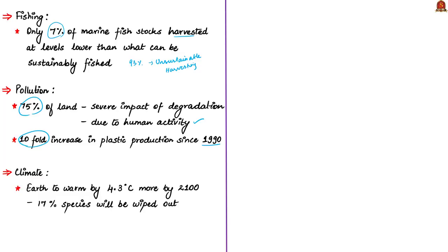With respect to climate, with the present trend, Earth is to warm by 4.3 degrees Celsius more by 2100, which will lead to wiping out of 17% of species. This report is of huge significance and will be having more news articles about this in the days to come.